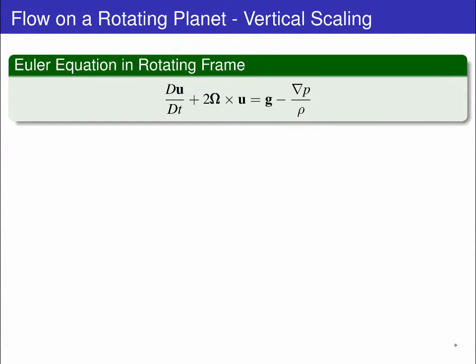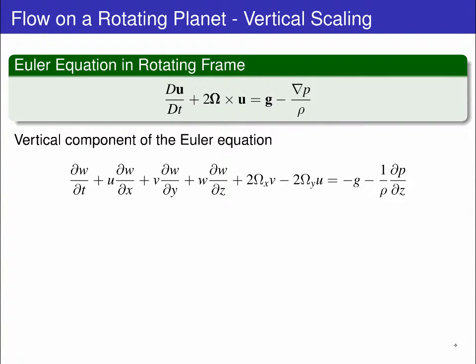We will first consider the vertical component of the rotating Euler equation. We write it out in full, giving the vertical acceleration and advection terms, a term with the x component of the rotation vector omega, a term with the y component of omega, gravity and the vertical pressure gradient.